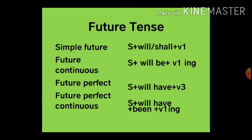Future tenses: Simple future — subject plus will or shall plus V1. We use 'will' with almost all subjects and 'shall' in the interrogative form with 'I' and 'we' to make an offer or suggestion. Future continuous tense: subject plus will be plus V1 plus ing. Future perfect tense: subject plus will have plus V3. Future perfect continuous tense: subject plus will have been plus V1 plus ing.